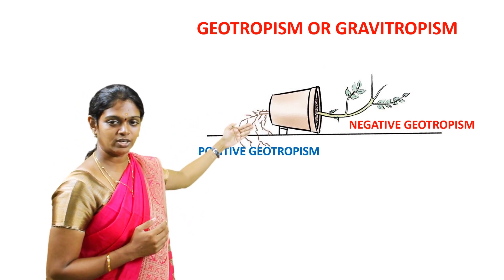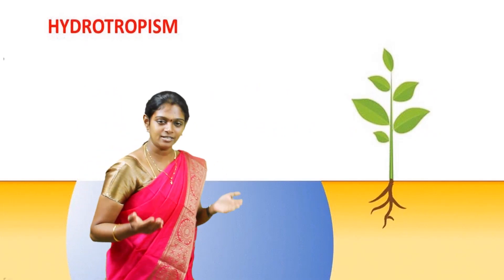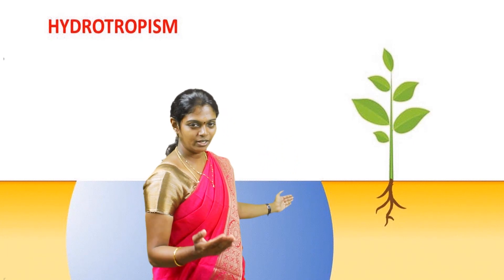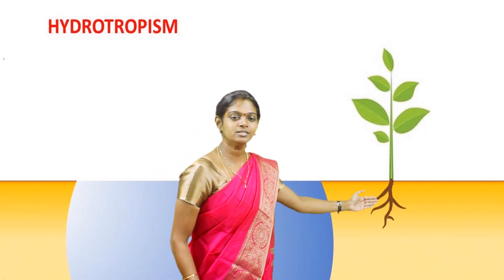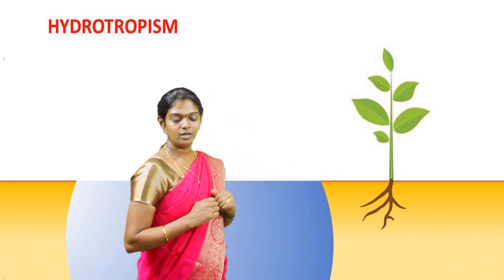Hydrotropism: 'hydro' refers to water. The movement of plant parts in response to water is known as hydrotropism. It is the tendency to grow or reach towards an area with moisture content. Here you can see the roots are moving towards water — this movement is known as hydrotropism.